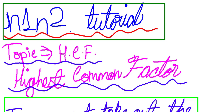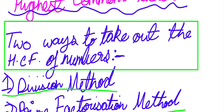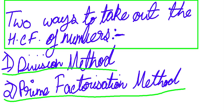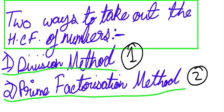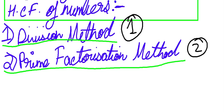Hello friends, welcome back to N1 into tutorial. I am N1. Today we are going to learn HCF. The full form of HCF is Highest Common Factor. We can take out the HCF of numbers by two methods: the division method and the prime factorization method. So friends, let's start.